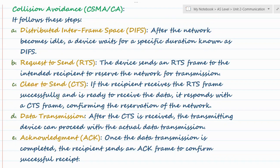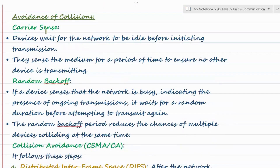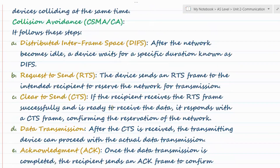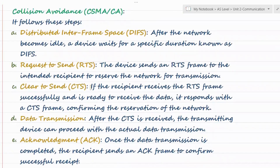Once the receiver sends CTS and the sender receives it, data transmission begins. The sender sends the data. Last but not least: Acknowledgement. Once data transmission is completed, the recipient sends an acknowledgement frame to confirm successful receipt. So the initial steps — Carrier Sense and Random Back-off where the device waits a random amount of time if the network is busy — are the same in both.